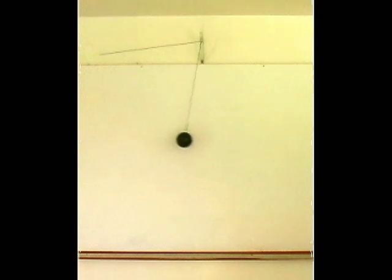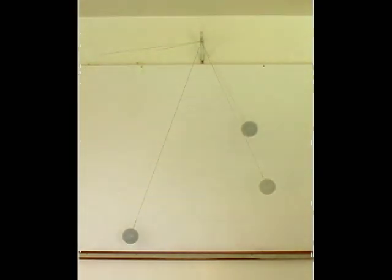Short pendulums swing back and forth rapidly, long pendulums slowly. An interesting fact about pendulums is that the mass of the pendulum bob doesn't affect the rate of swing, and, within certain limits, the amplitude of the swing is also not a factor. The length determines the period of the pendulum.